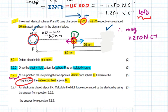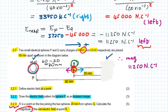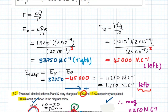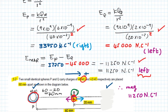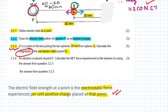For this question, marks are allocated as follows. There is one mark for substituting for the electric field of P, one mark for substituting for the electric field of Q, one mark for subtracting, and one mark for the final answer. After review, one mark is also awarded for the formula, giving a total of five marks.